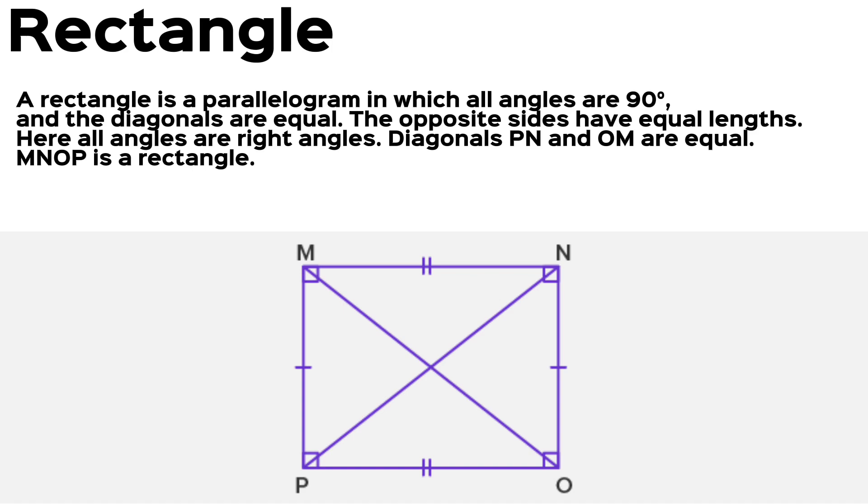Last but not least, we have rectangle. A rectangle is a parallelogram in which all angles are 90 degrees and the diagonals are equal. The opposite sides have equal lengths. Here, all angles are right angles. Diagonals PN and OM are equal. MNOP is a rectangle.